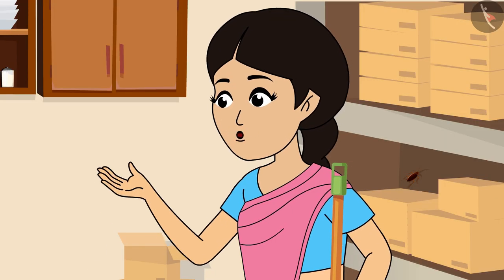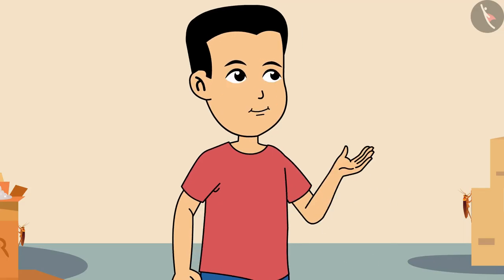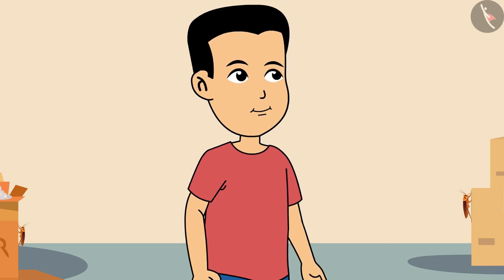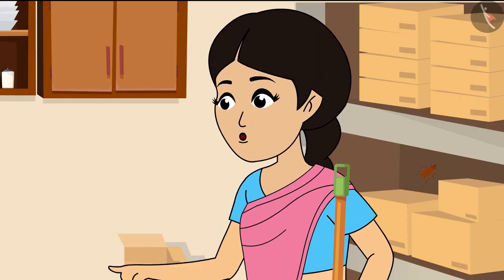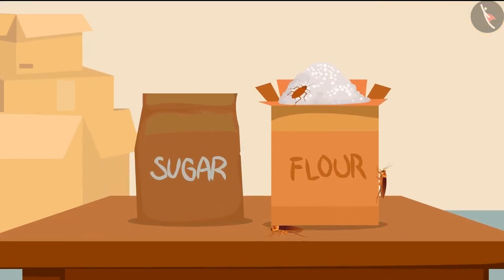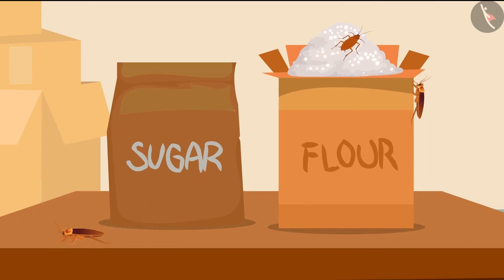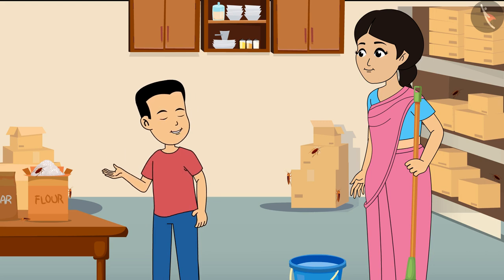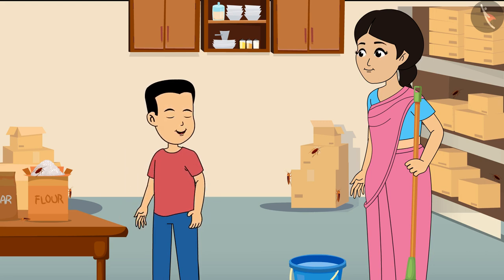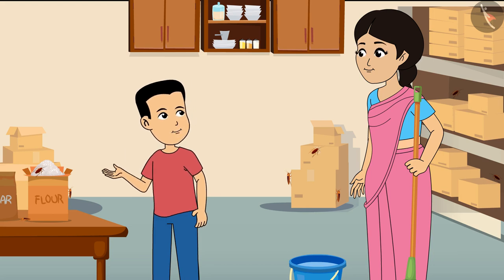Mother asks Deepak what needs to be done. He notices there are many cockroaches in the room, moving around here and there — even two or three in the flower box. Deepak wonders how they are alive inside the door, saying that if anything went into his own nose he would feel suffocated, and questioning how the cockroaches are breathing.